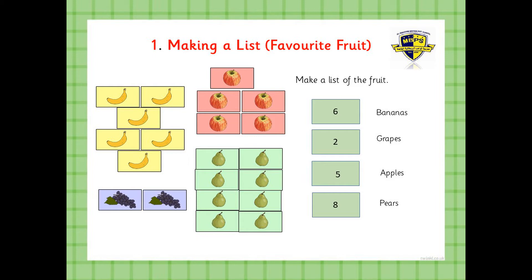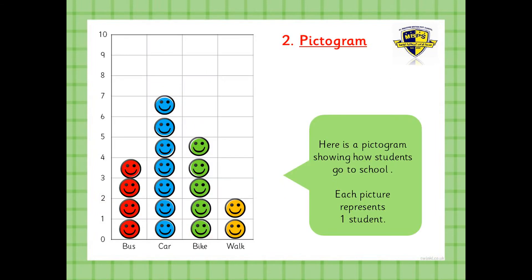Do you understand now how to make a list? Number two — the pictogram shows how pupils go to school. Here is a pictogram showing how children go to school. Each picture — a happy face — represents one child. So you've got children who walk to school, children who go by bike, children who go by car and children who go by bus.